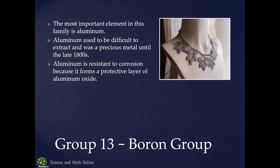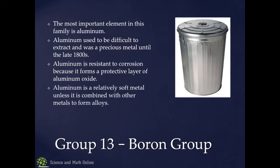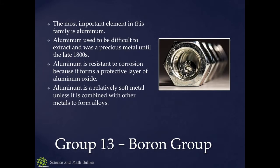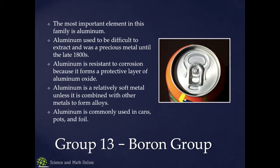Aluminum is highly resistant to corrosion because it forms an actual layer of aluminum oxide on the outside that protects it — that's why aluminum foil lasts forever. It's relatively soft unless you combine it with something else. That's why it's used in cans, pots, and foils.